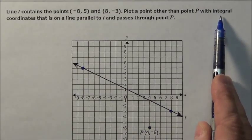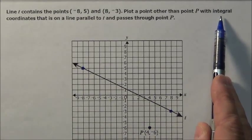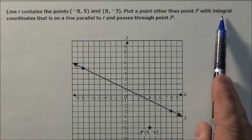Integral coordinates simply means you can't have a half. It's got to be an integer, negative 2, positive 6. They don't want any 2.3's or anything.